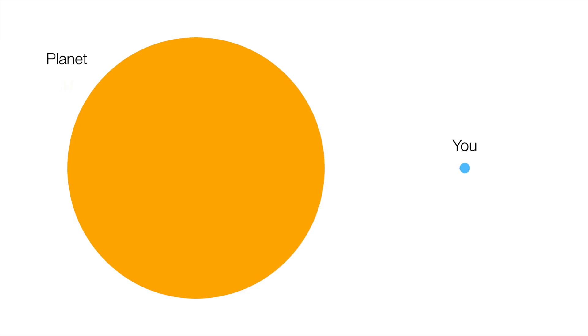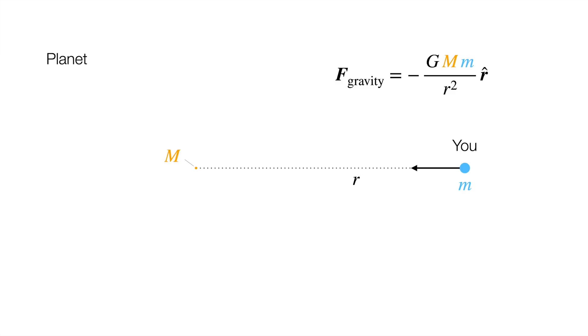The planet's mass pulls on you through the force of gravity, and if you've taken physics before, you probably learned to calculate this force using Newton's famous inverse square law. The magnitude is proportional to the planet's total mass, and it points toward the center. If this equation's really true though, it means that the force you feel is exactly the same, whether the planet looks like this, or whether we shrink the whole thing down to the point at its center. That's weird, isn't it?